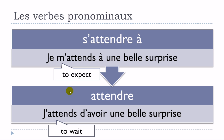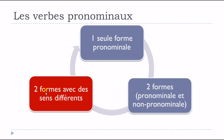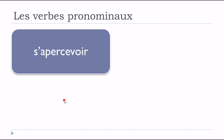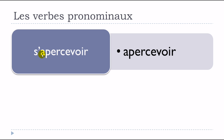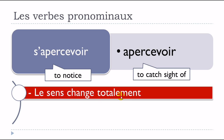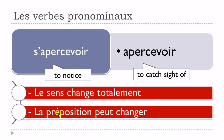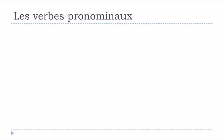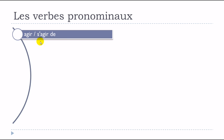Now the third situation: two forms exist but the meaning changes significantly. For example, s'apercevoir and apercevoir. S'apercevoir means 'to notice' and apercevoir means 'to catch sight of' — le sens change totalement. The preposition may also change depending on whether you use the pronominal or non-pronominal form.